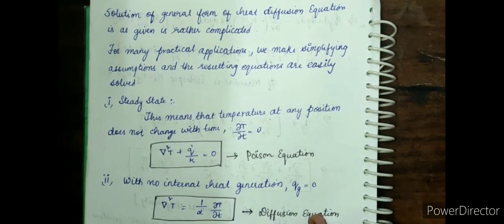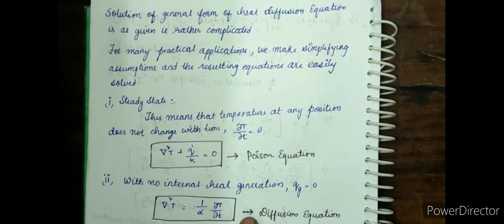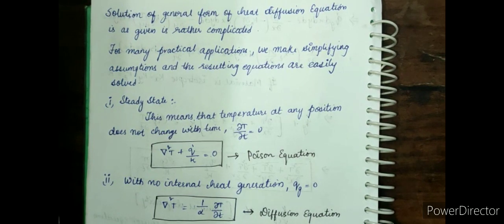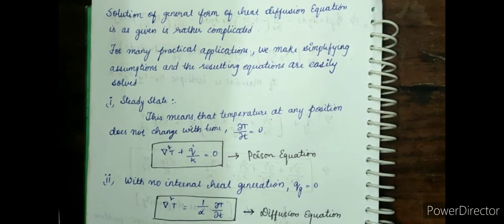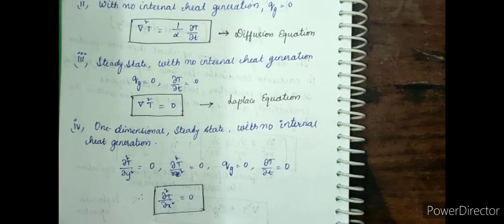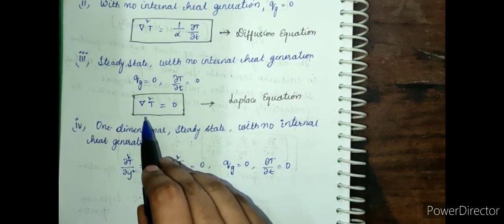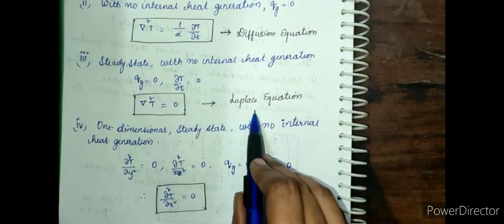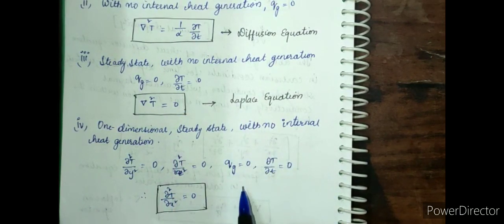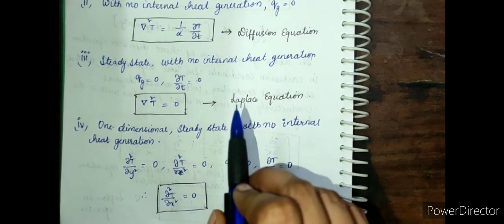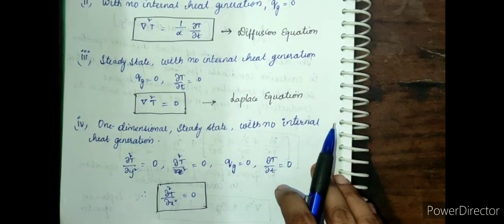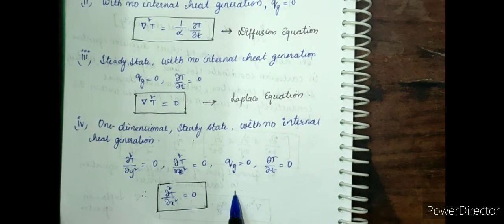The second case is with no internal heat generation, so qg = 0. The equation becomes: ∇²T = (1/α)·(∂T/∂t). This is called the diffusion equation, representing time-dependent three-dimensional heat conduction with no internal heat generation. The next case is steady state with no internal heat generation — qg = 0 and ∂T/∂t = 0. The equation becomes ∇²T = 0, which is called the Laplace equation, representing three-dimensional steady-state conduction with constant thermal conductivity and no internal heat generation.